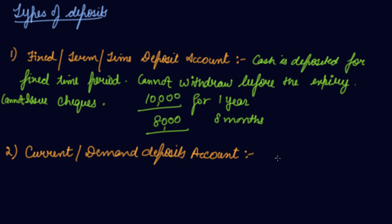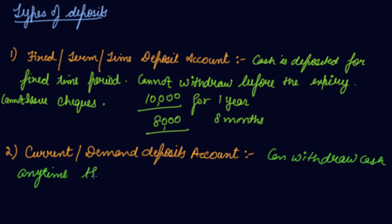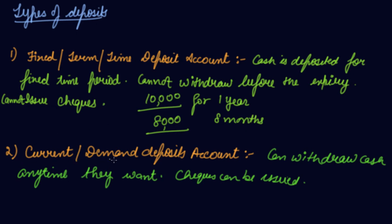The second type is the current or demand deposit account. In this, a depositor can deposit and withdraw cash any number of times they want, and checks can be issued. Ordinarily, businessmen deposit their funds in this type of account. Generally, no interest is paid by the bank on current accounts.